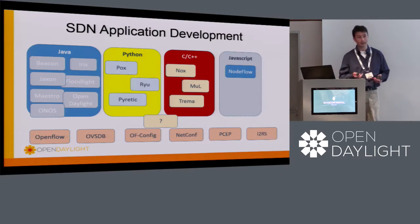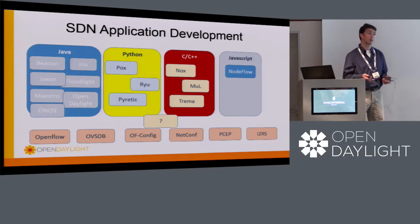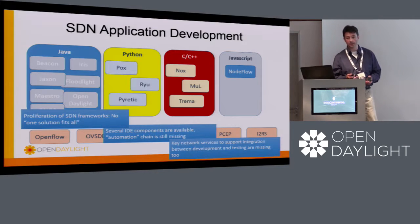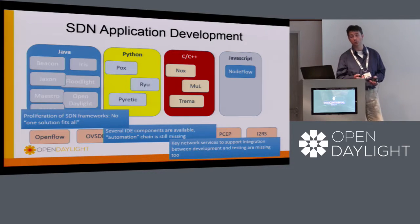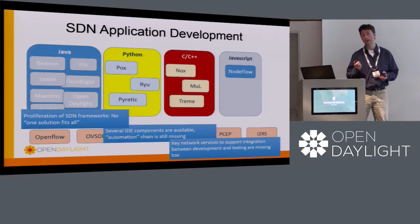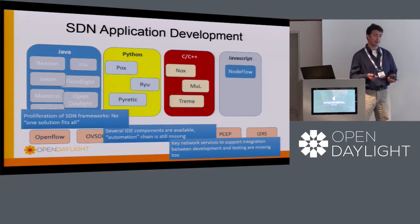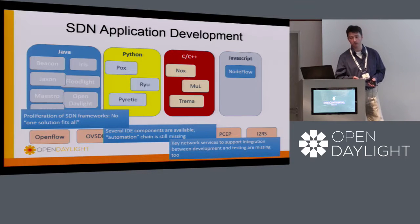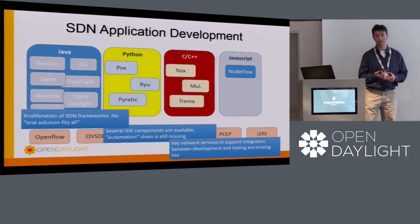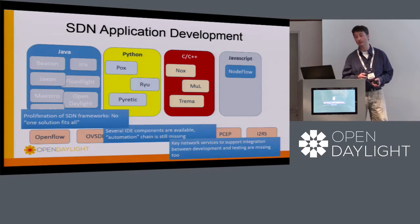If you have an application and you're developing it for an API, you're essentially going to be landlocked to that particular controller. How can you easily migrate? The feature list of the controllers are slightly different, so one solution does not fit all, depending on what the requirements of your application are. How do you design and develop an application to reconfigure your network accordingly? What kind of UI, what IDE are you using? And then when you deploy your application, how do you debug it, troubleshoot it, and ensure it's working as you expect?